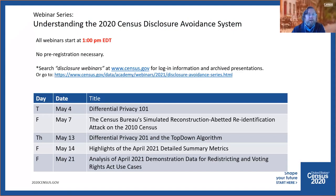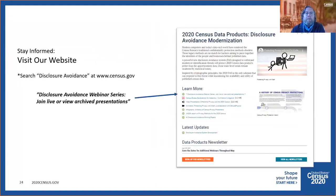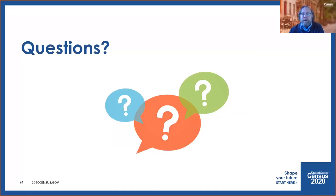Before opening the floor for questions, I'd like to encourage you to join us for the remaining webinars in this series. Tomorrow, May 14th, we'll highlight the detailed summary metrics from our April 2021 demonstration data release. Next Friday, May 21st, we will provide an analysis of empirical assessments of the demonstration data for the Redistricting and Voting Rights Act use cases. If you'd like to stay updated, please subscribe to our newsletter. Check out our website for frequently asked questions, fact sheets, videos, blogs and more. I'll now introduce Megan Mowry to help moderate your remaining questions.